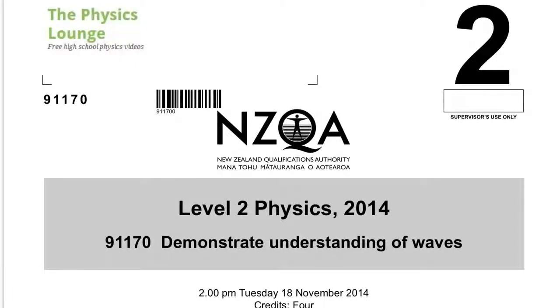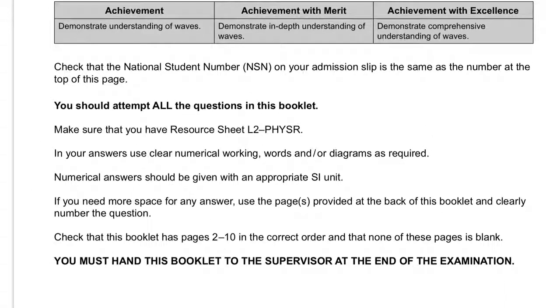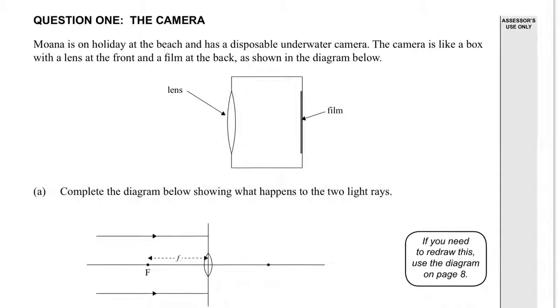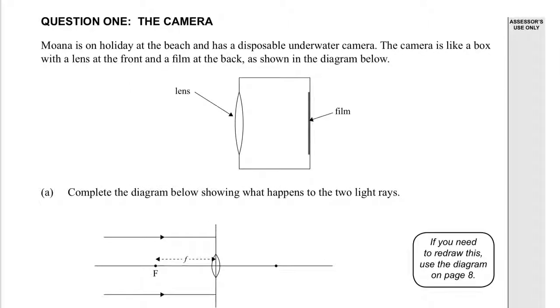2014 Level 2 Waves, 4 credits. Should probably spend a bit less time on it, but it still has 3 questions same as all the other ones. Question 1: The Camera. Moana is on holiday at the beach and has a disposable underwater camera. The camera is like a box with the lens at the front and a film at the back as shown in the diagram below. Here's our film, there's our lens, the light coming from the left going to the right.